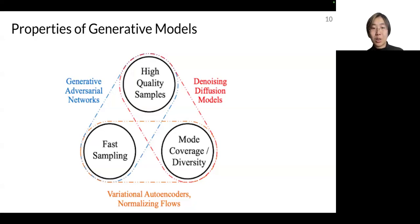Then moving to VAEs or normalizing flows, another generative method. Both of them actually have fast sampling, have mode coverage and diversity. However, it doesn't really generate high quality samples.